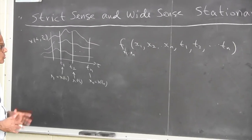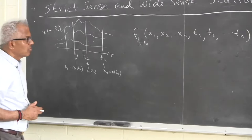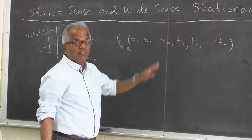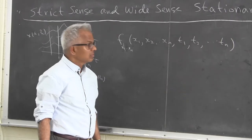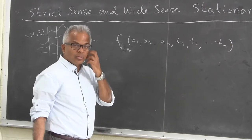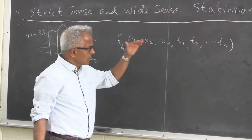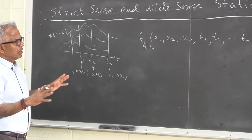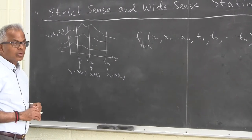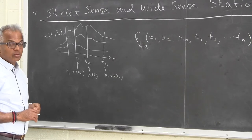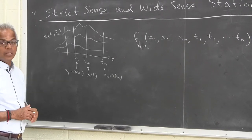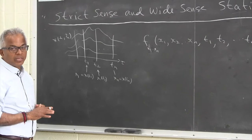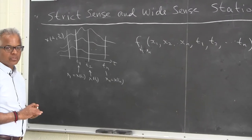For complete characterization, n is arbitrary here. If you put n equal to 1, you get the first order characterization; n equal to 2 gives the second order characterization, and so on. If you have this density function for all values of n and arbitrary time indices t1 through tn, that's the complete characterization.